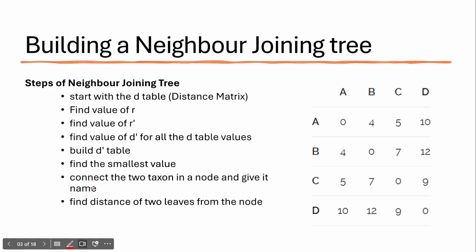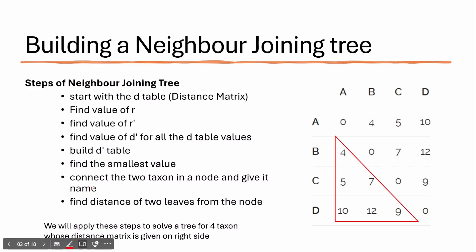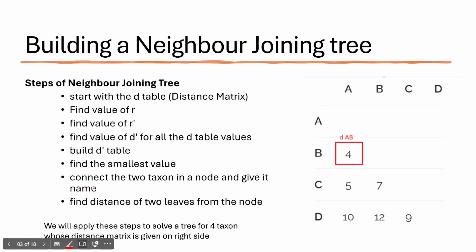To build a neighbor joining tree, what you require is a D table, also called a distance matrix, as shown on the right side. You can see we have four taxons: A, B, C, and D, and we will use these four taxons to build a neighbor joining tree. The distance matrix has a mirror image of itself and the important values here are 4, 5, 7, 10, 12, and 9. Each value is the distance between two taxons — for example, the value 4 is the distance between A and B.